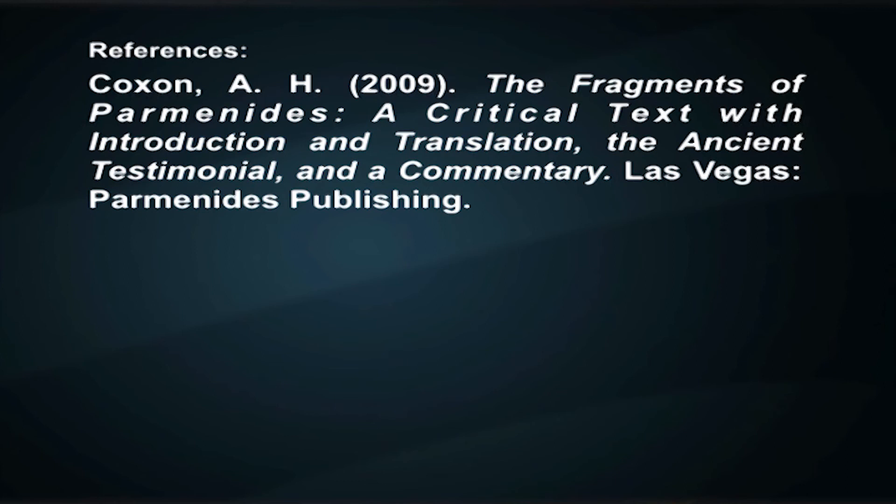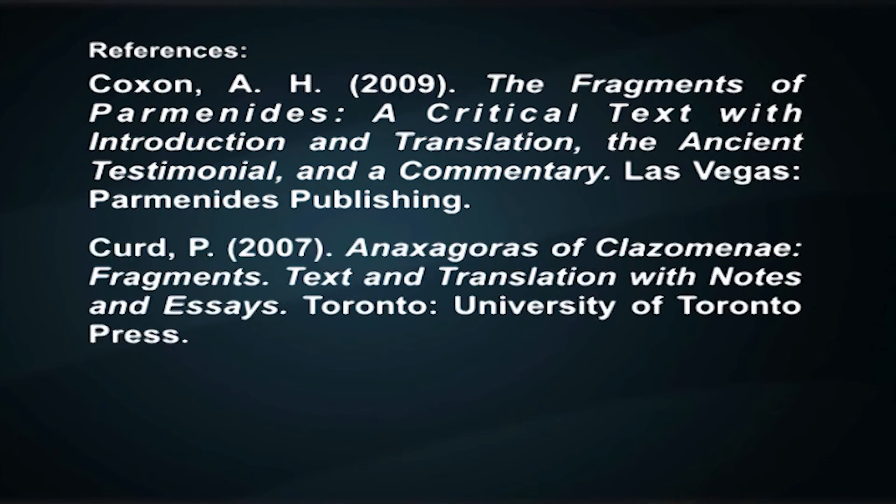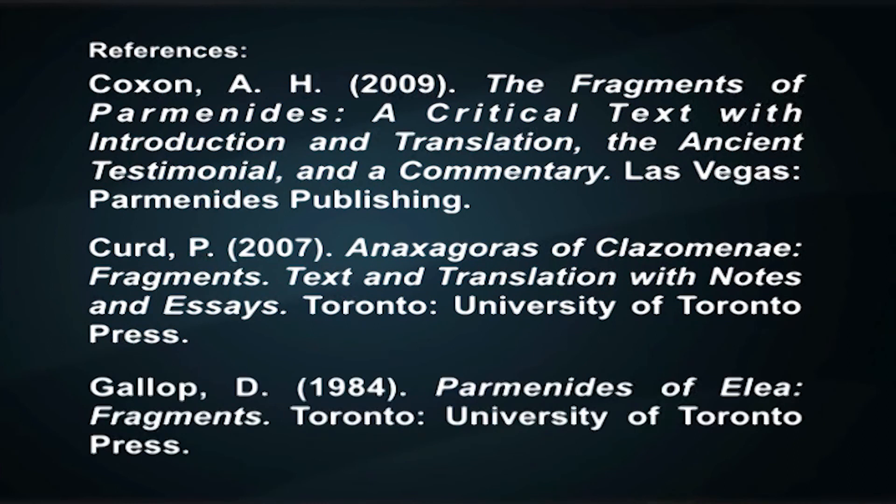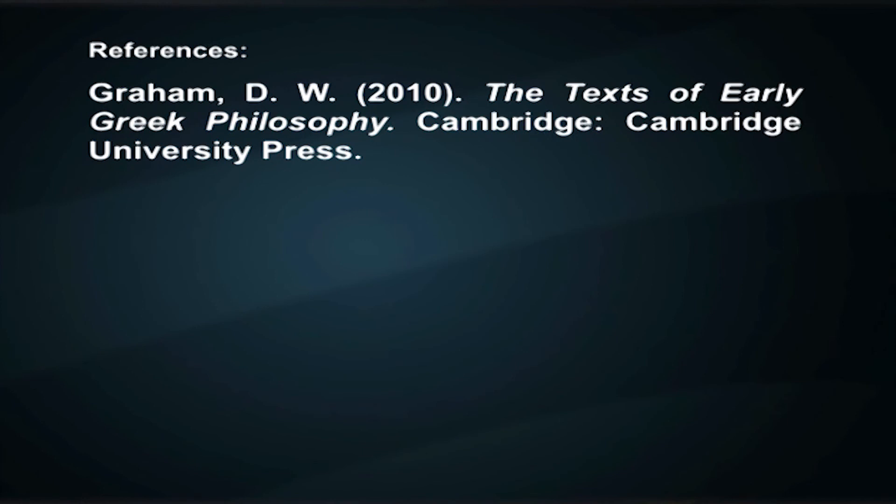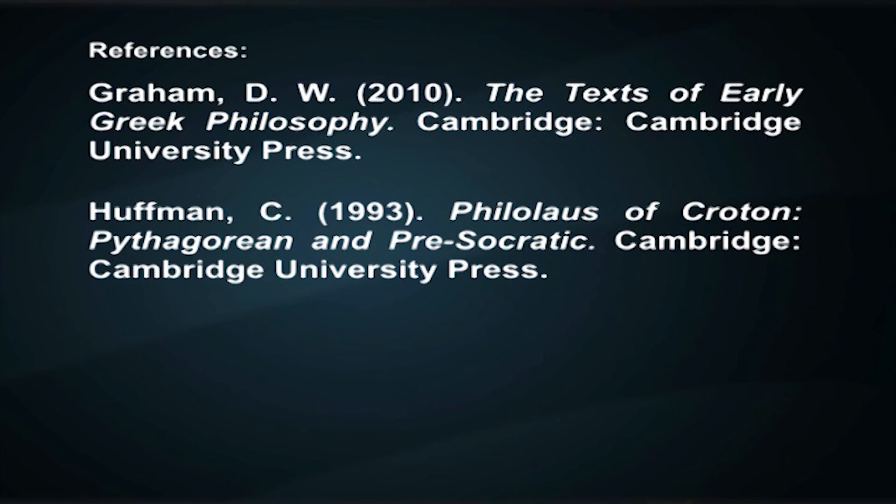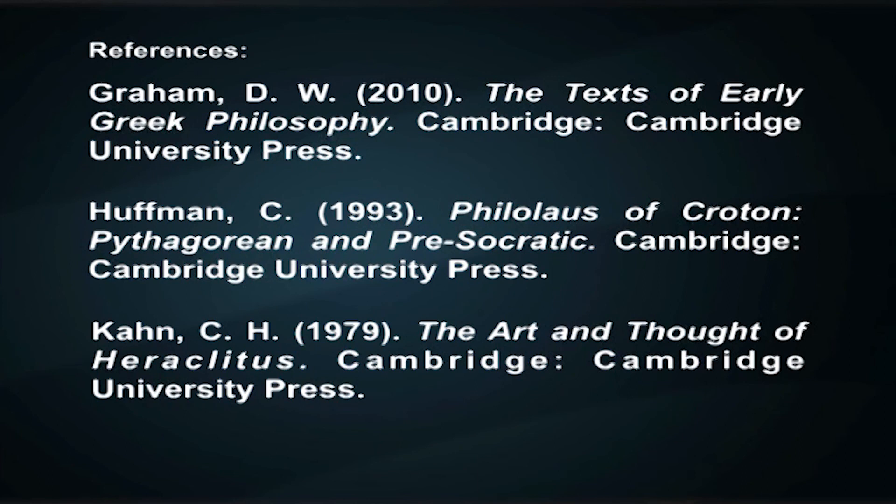Anaxagoras of Clazomenae: Fragments, Text and Translation with Notes and Essay, written by P. Curd in 2007, published by University of Toronto Press. Parmenides of Elea: Fragments, written by D. Gallop in 1984, published by University of Toronto Press. The Texts of Early Greek Philosophy, written by D.W. Graham in 2010, published by Cambridge University Press. Philolaus of Croton: Pythagorean and Pre-Socratic, written by C. Huffman in 1993, published by Cambridge University Press. The Art and Thought of Heraclitus, written by C.H. Kahn in 1979, published by Cambridge University Press.